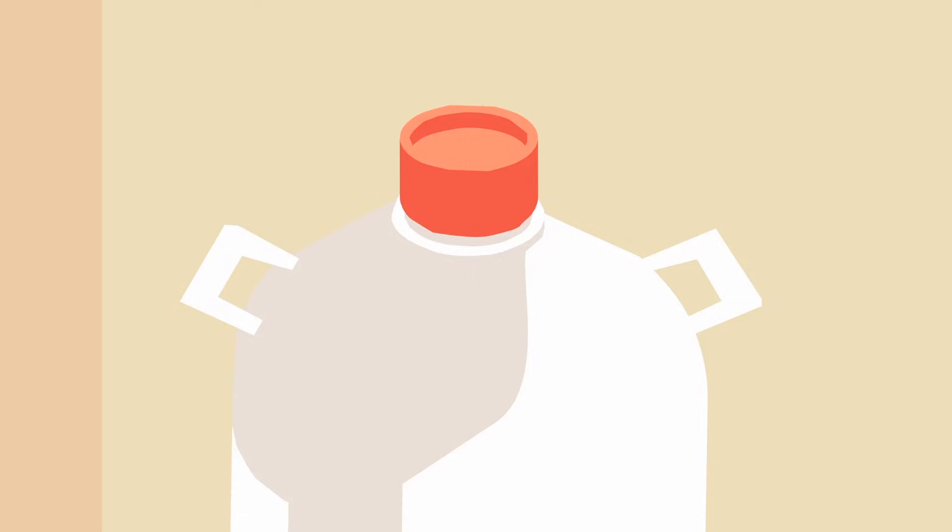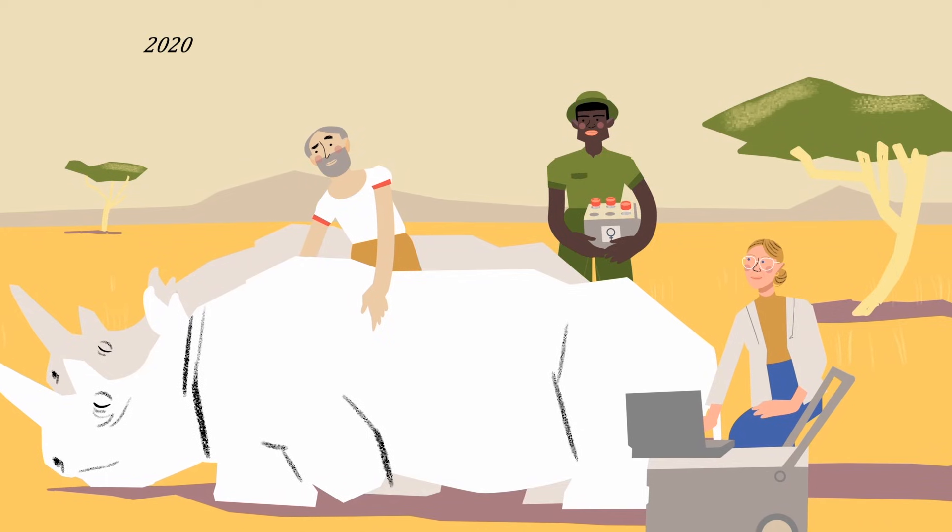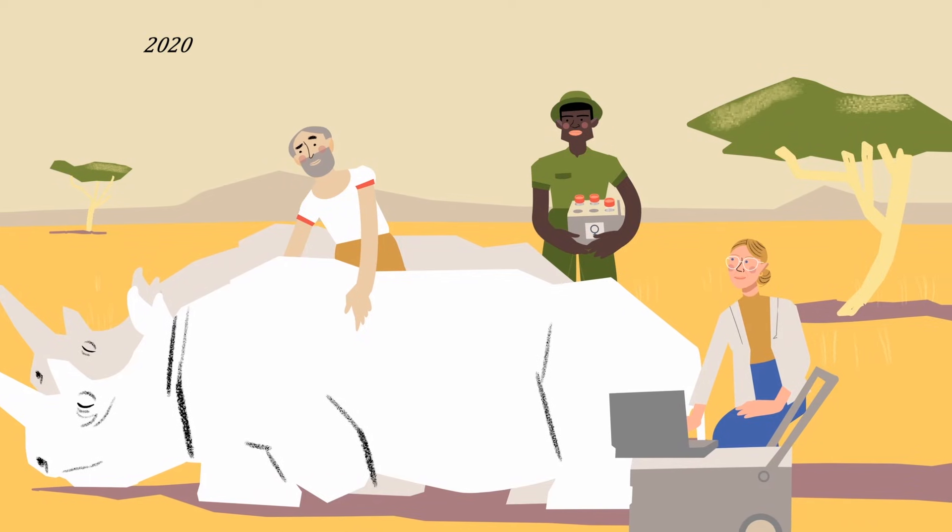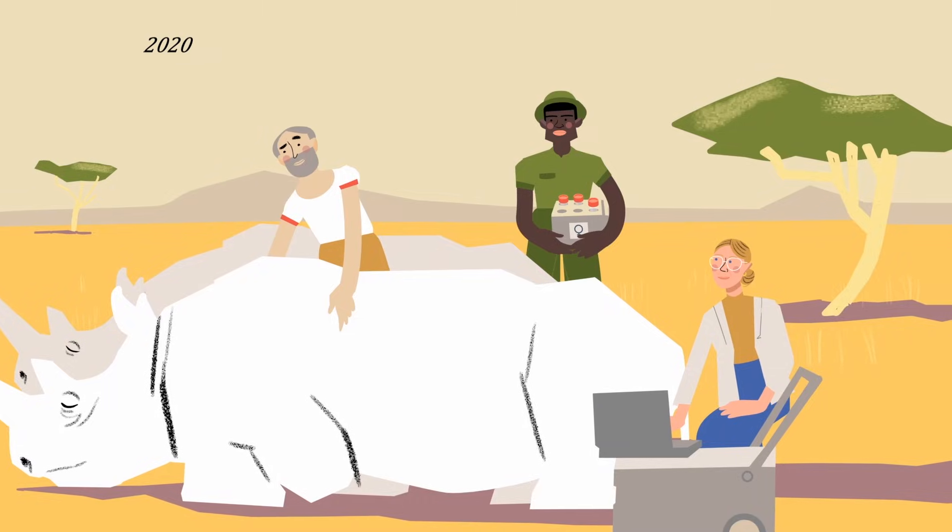Another collection in December 2019 produced one more embryo. As of early 2020, the plan is to collect Najin and Fatu's eggs three times a year, if they're healthy enough.